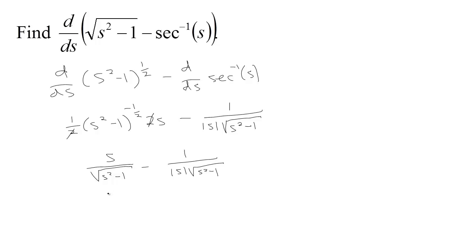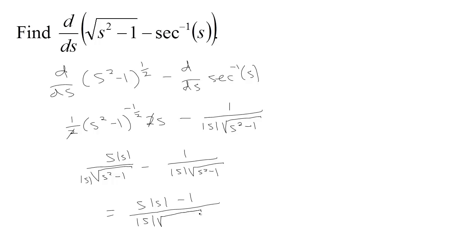To get a common denominator, we multiply the first term's top and bottom by the absolute value of s. On top we get s times |s| minus 1, all over |s| times sqrt(s²-1).